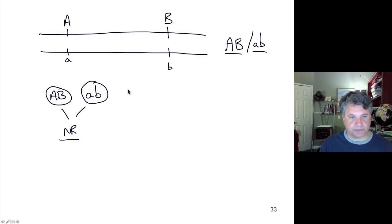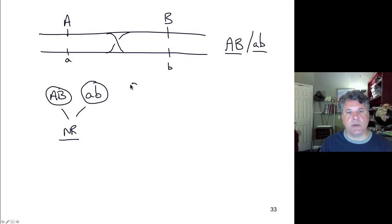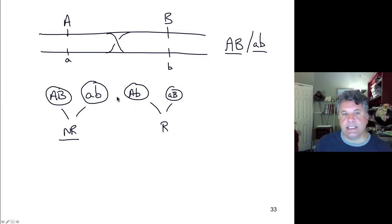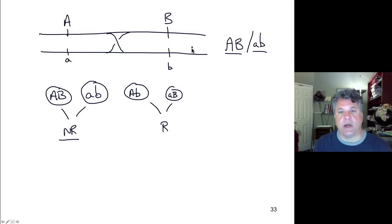But if crossing over occurs, in some gametes we will have big A with little b and little a with big B — immediately recognized as recombinant gametes, bearing recombinant chromosomes because we've recombined alleles for the different genes. Note that to detect recombination, we need genetic markers — we need to be heterozygous for particular alleles. Otherwise we cannot detect crossing over by identifying non-recombinant versus recombinant gametes.